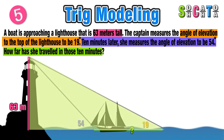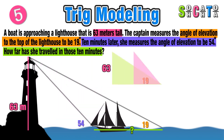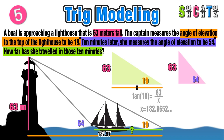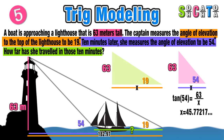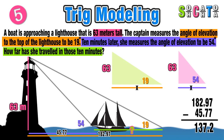We have two overlapping right triangles — a large one with a height of 63 meters and an angle of 19 degrees, and a smaller one with the same height of 63 meters but an angle of 54 degrees. Using tangent, the base of the larger triangle is approximately 182.97 meters, and the base of the smaller triangle is approximately 45.77 meters. Subtracting 45.77 from 182.97 gives us approximately 137.2 meters — the distance the boat traveled in that 10-minute period.